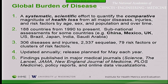We have 306 diseases and injuries, over 2,000 sequelae that come after these diseases, and 79 risk factors, which is the most important part of what we do. It's updated annually and it's a grant from the Bill and Melinda Gates Foundation.